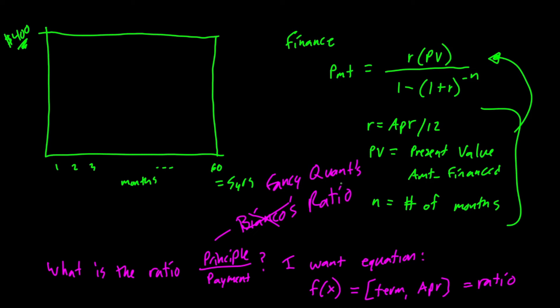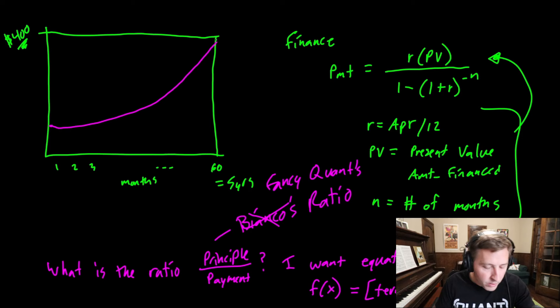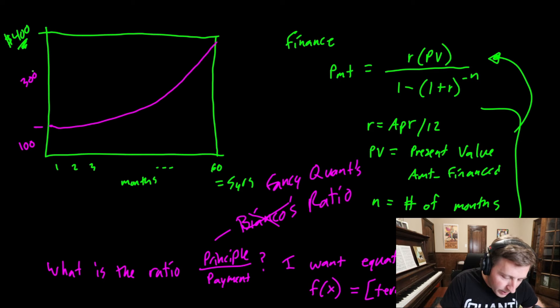Okay, so this is my ratio here. Bianco's or fancy quant here. Let's just put fancy quants ratio. And this is what I need here. Let me go back here to the financial theory a little bit. When you make your first payment, this has the smallest amount of principle out of all your payments. And then as you go to period two, you pay a little bit more principle and a little bit more principle until you get to like the very end here.